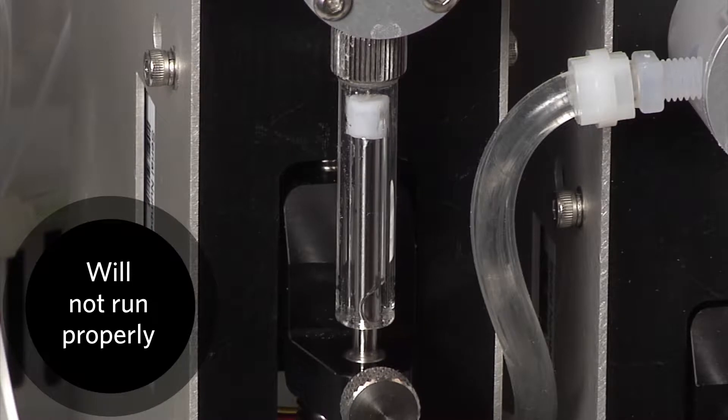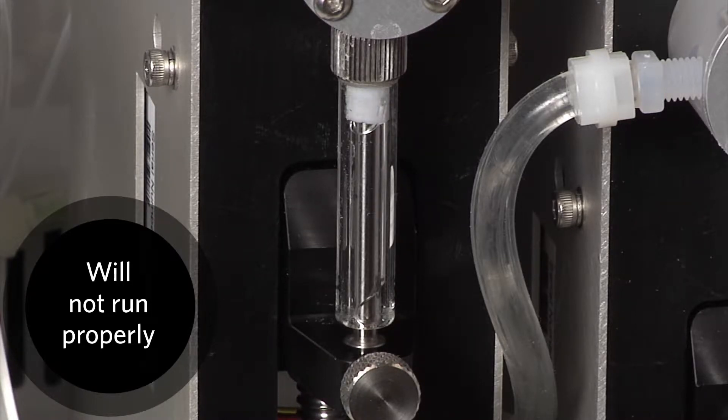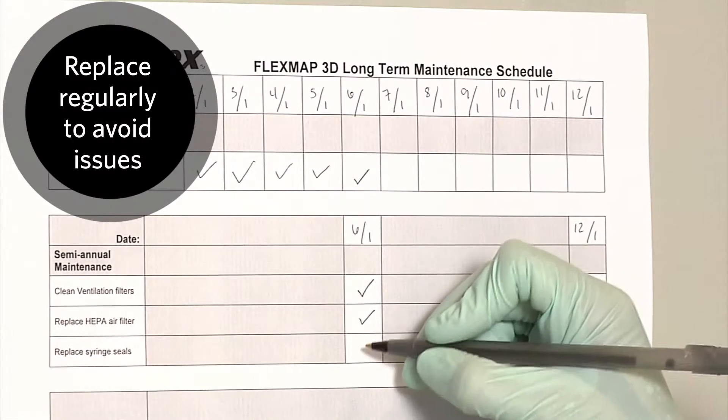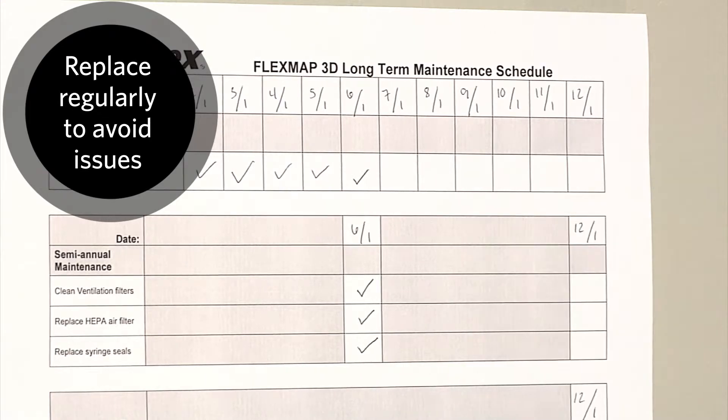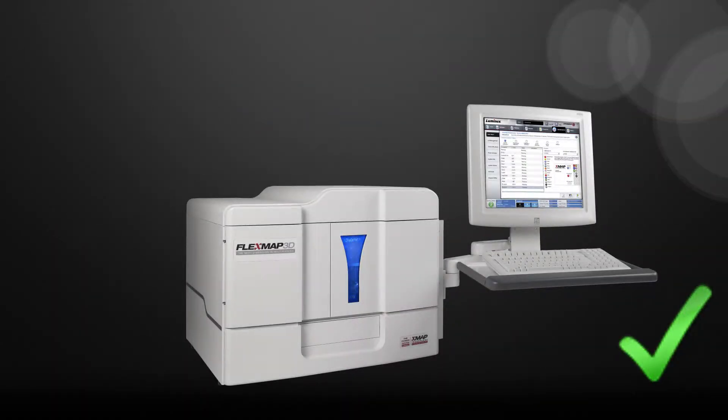The FlexMap 3D cannot run properly if the seal is broken. Regular replacement of the seal should help avoid any issues with the seal and keep the FlexMap 3D working properly.